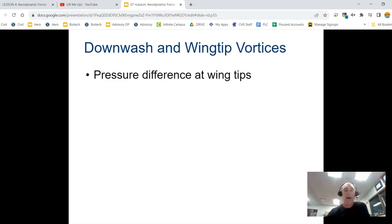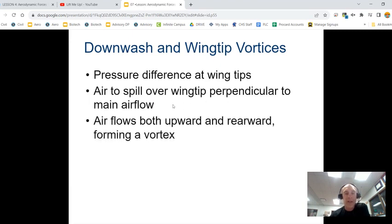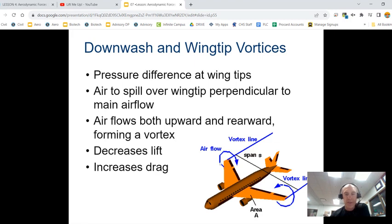So you also have this thing called downwash and wingtip vortices. And that's because of a pressure difference at the wingtips. The air typically will spill over the wingtip perpendicular to the main air flow. And so you have this little vortex that decreases lift. So we watched a little video about that. And there's a lot of different wing designs that engineers are creating to try to compensate for some of these wingtip vortices.